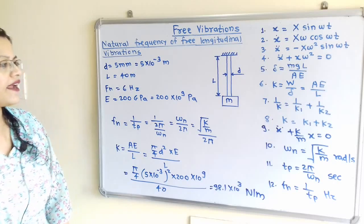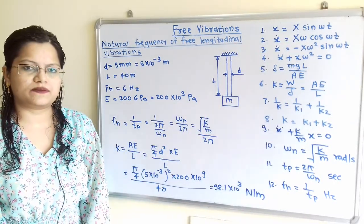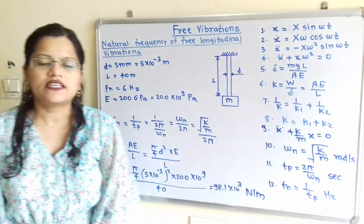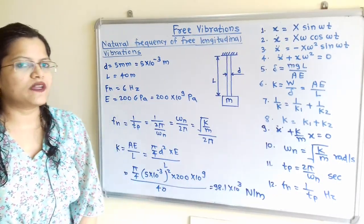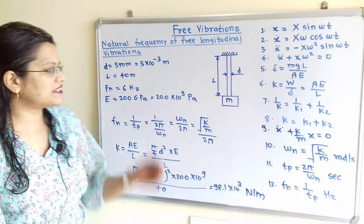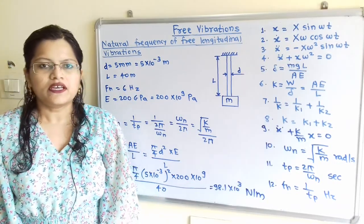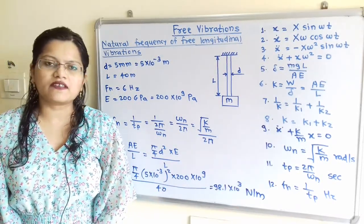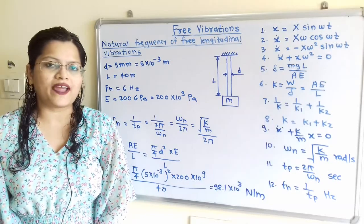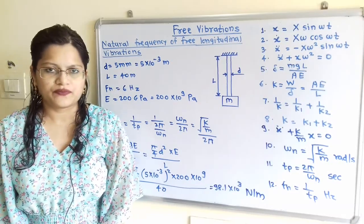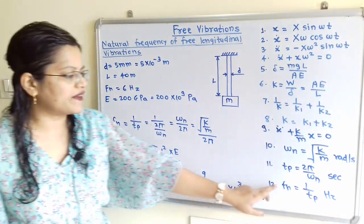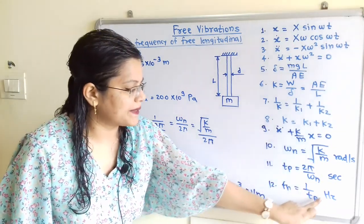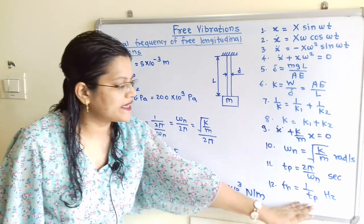We need to find the value of mass M. Referring to the relevant formulas, the natural frequency formula is fn equals 1 by Tp, where Tp is the time period.